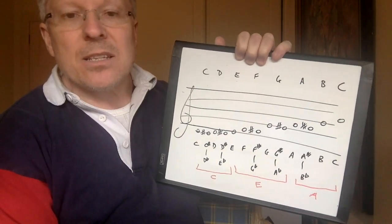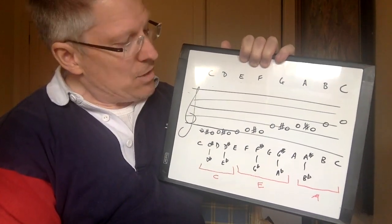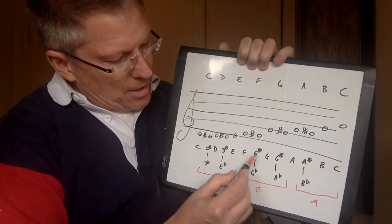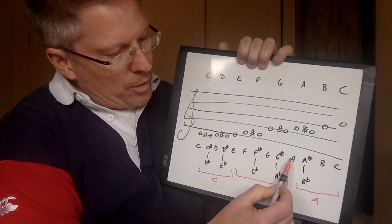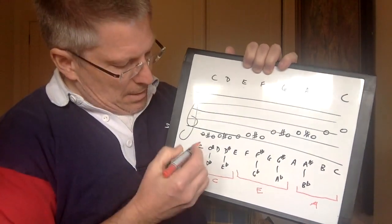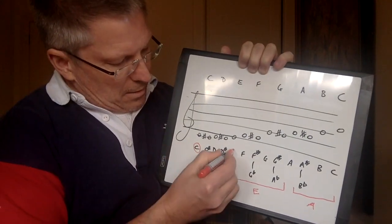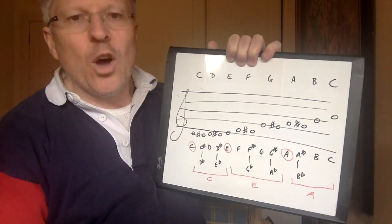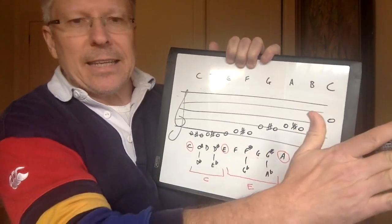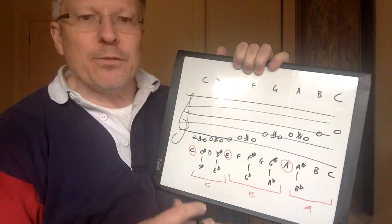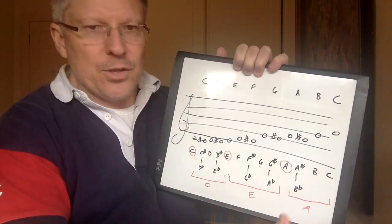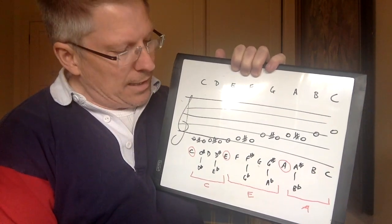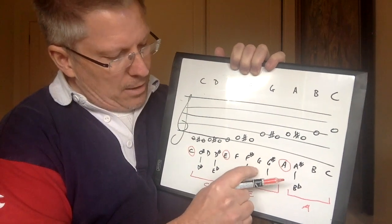We're going to use three strings — C, E, and A — and play: open, first, second, third fret on C; open, first, second, third, fourth fret on E; open, first, second, third fret on A. The open notes are C, E, and A. While there is an open G on the fourth string, we're not going to use it, because we want a linear idea of going from low to high. Our G will be played on the third fret of the E string.